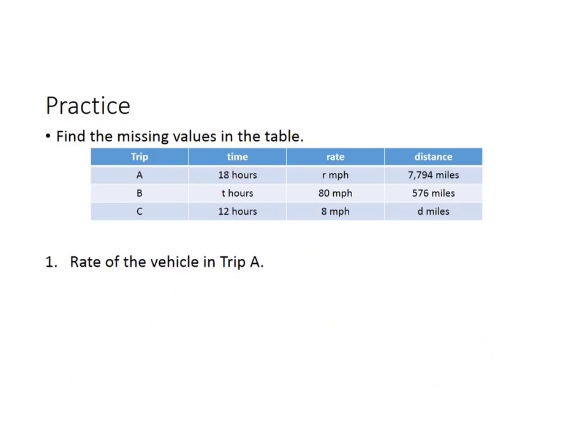Now you're going to do some practice on your own. We're going to find the missing values in this table. Now on this table, we have the trip: we have trip A, trip B, and trip C. We have the time, we have the rate, we have the distance. But if you look at trip A, the rate is missing. If you look at trip B, the hours are missing. And if you look at trip C, the distance is missing.